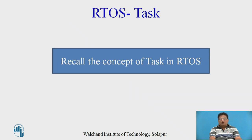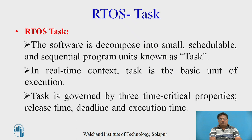Now, recall the concept of task in RTOS. The software is decomposed into small, schedulable and sequential program units known as tasks. Any software can have a number of defined tasks. In a real-time context, the task is the basic unit of execution. A task is governed by three time-critical properties: the release time, deadline, and execution time.